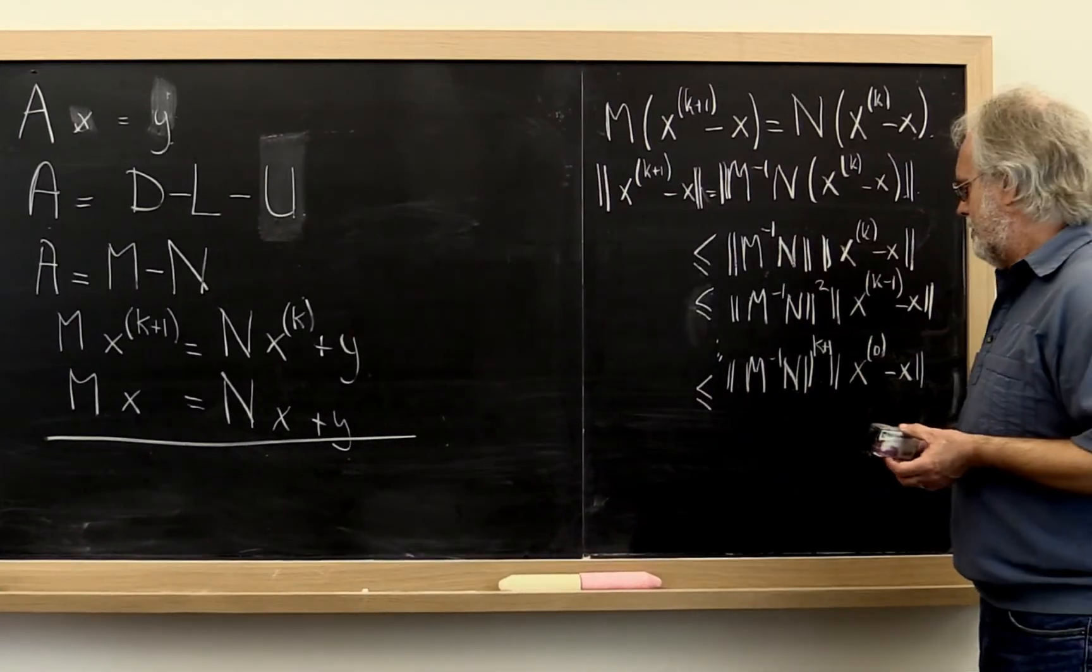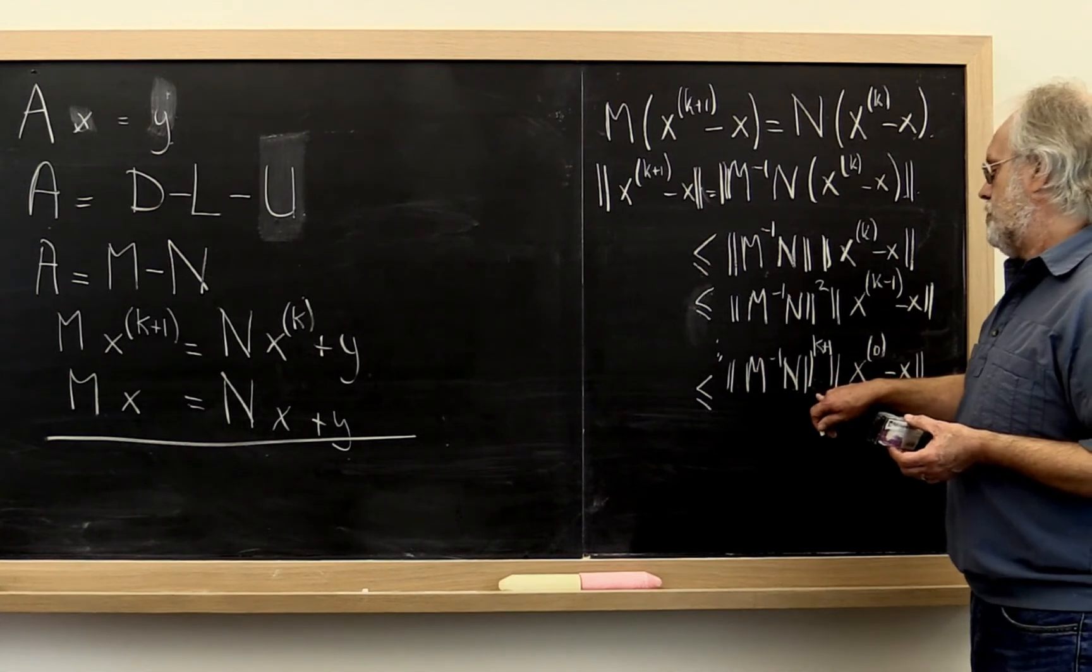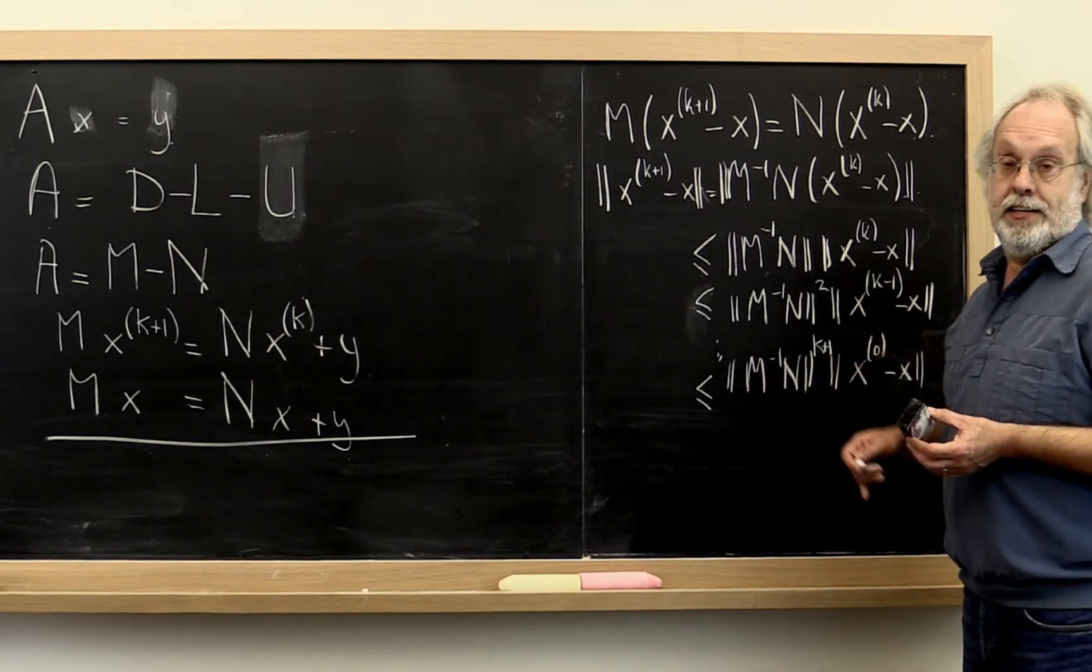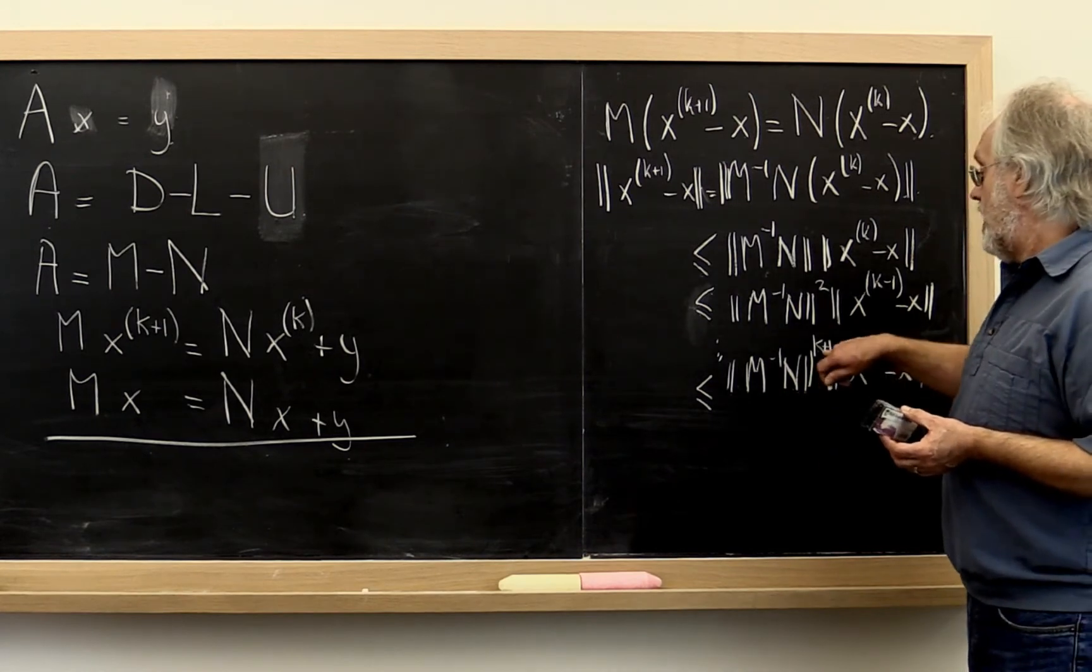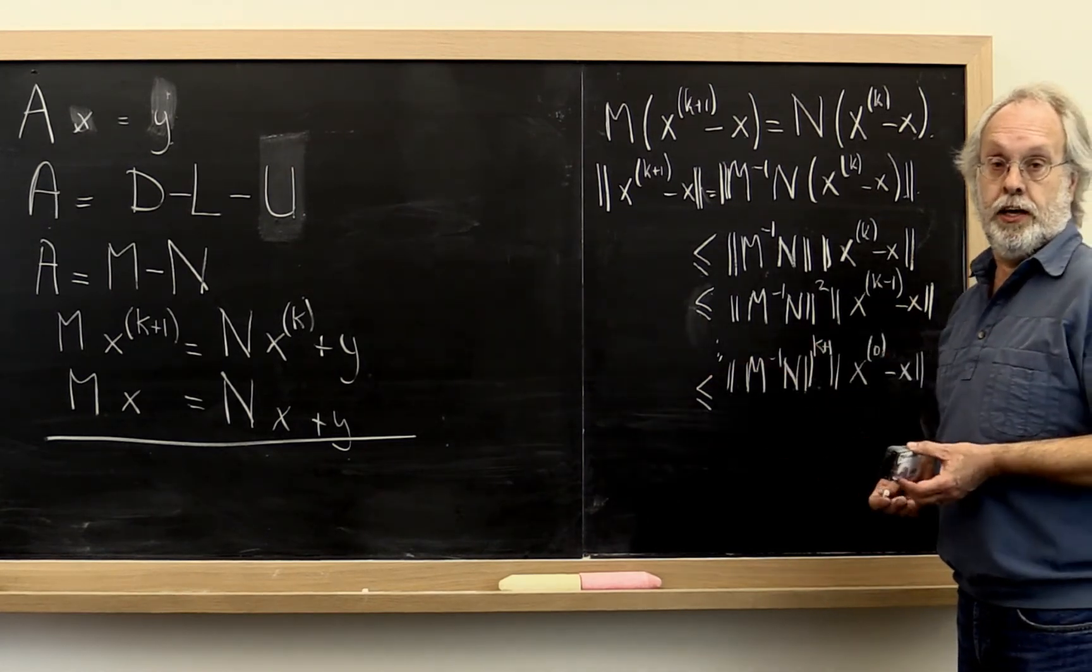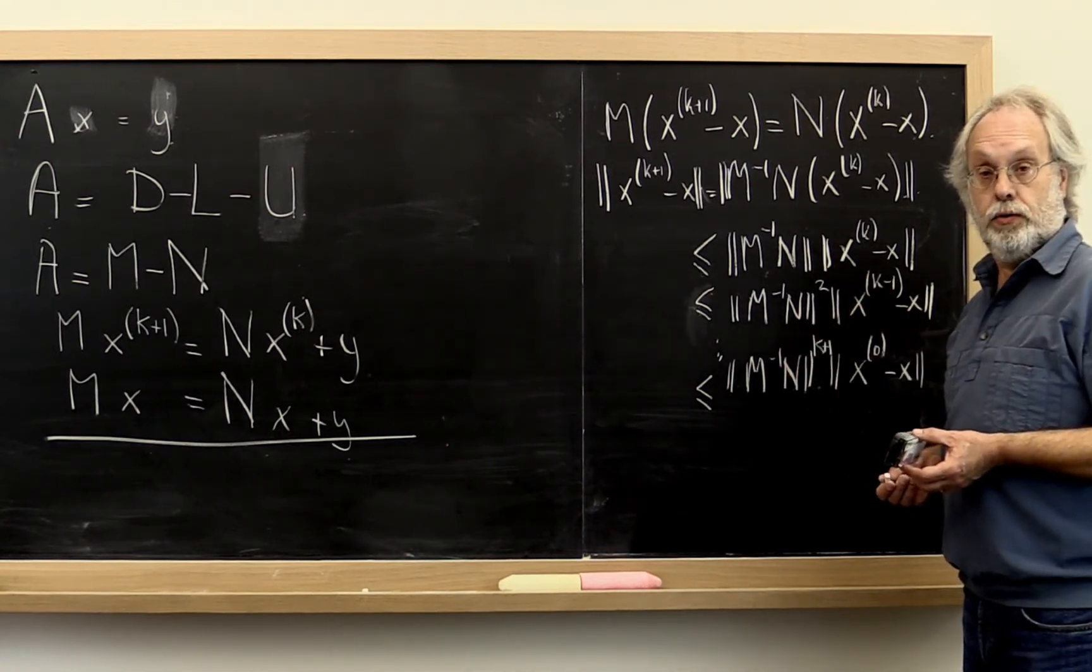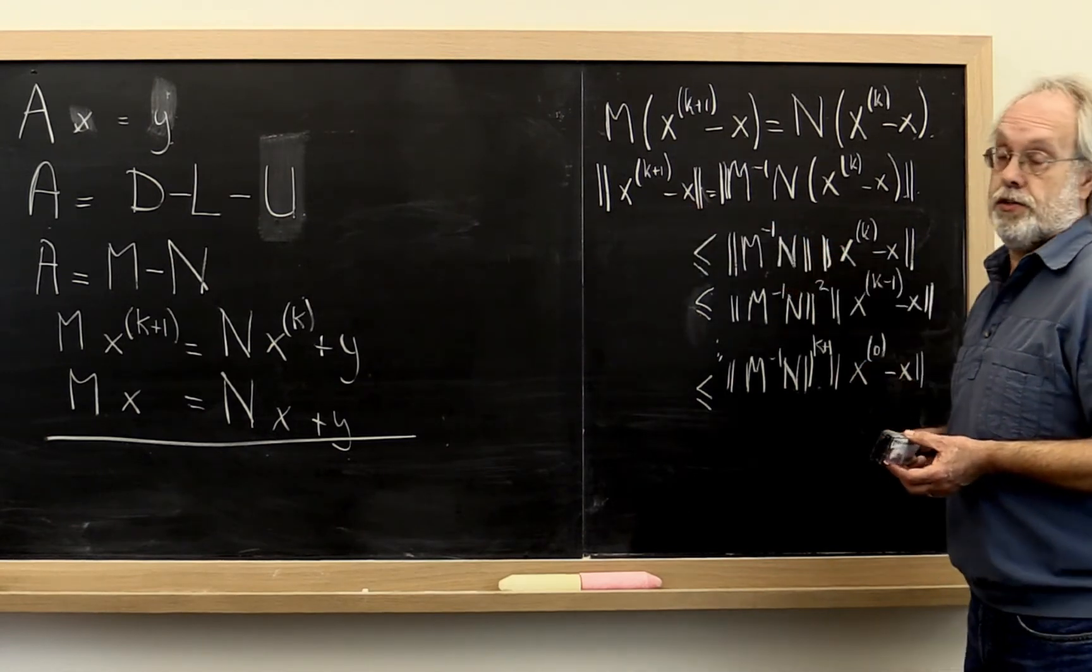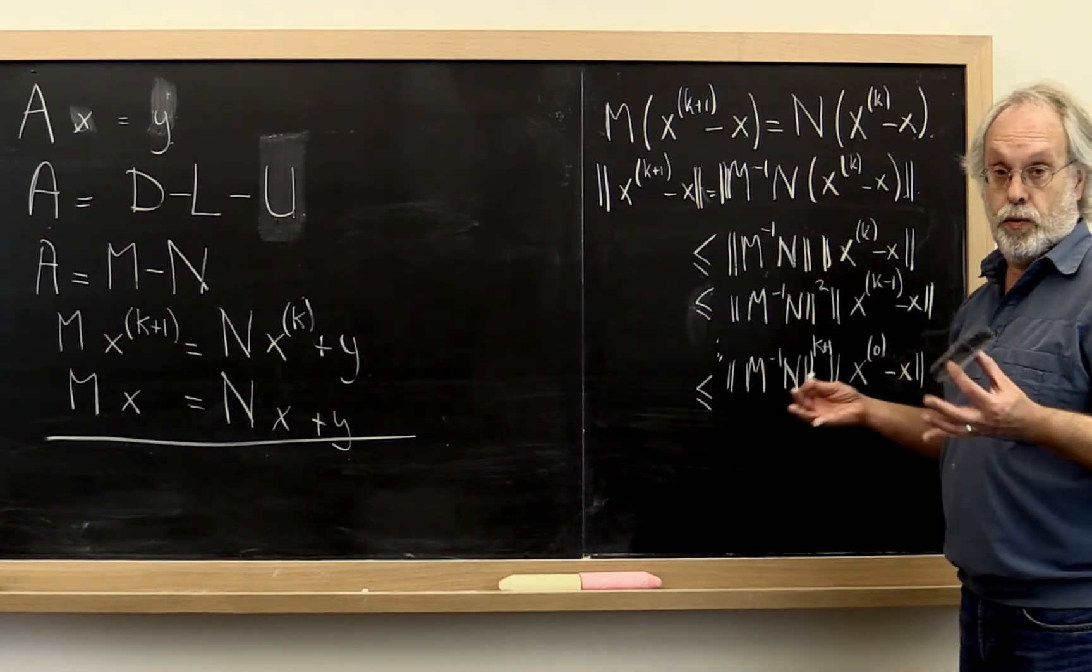Now what does this mean? If for this matrix norm, the norm of M inverse N is less than 1, then we know that raising that to the kth power and letting k go to infinity makes that coefficient go to 0. And therefore we know that our sequence of vectors converges to the right answer.